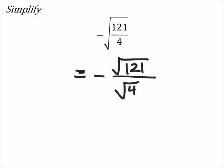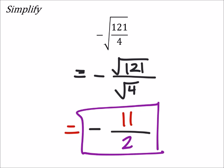So it's a negative: the square root of 121 is 11, the square root of 4 is 2. So the answer is negative 11 over 2.